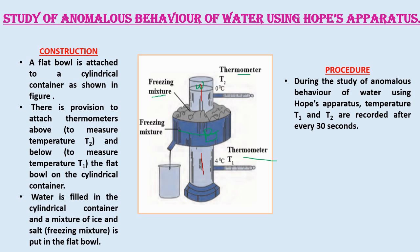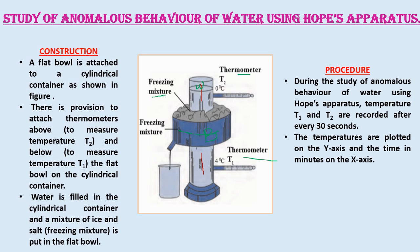During the study of anomalous behavior of water using Hope's apparatus, temperatures T1 and T2 are recorded after every 30 seconds. We have to plot these temperatures on the y-axis and the time in minutes on the x-axis. After the measurement of the temperatures in both thermometers, we plot them to obtain a graph.